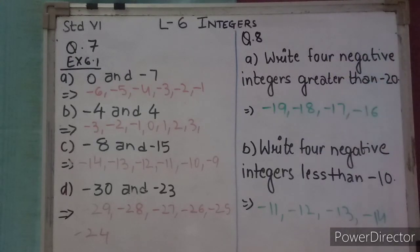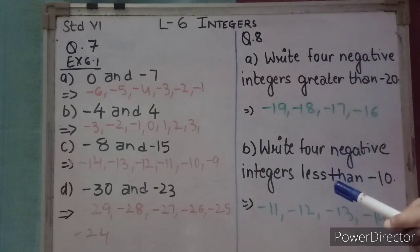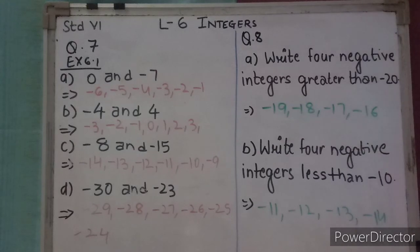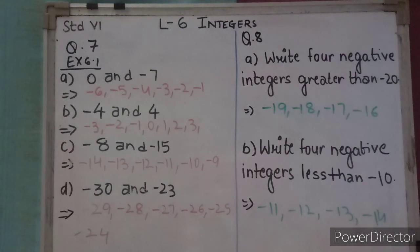Write 4 negative integers less than minus 10 — integers that are smaller than minus 10. So minus 11, minus 12, minus 13, and minus 14 are the 4 negative integers less than minus 10.